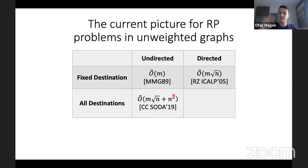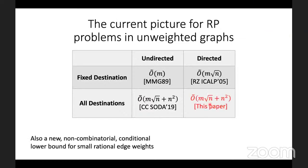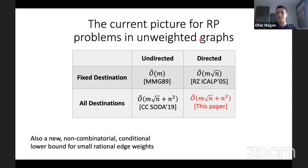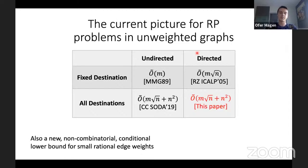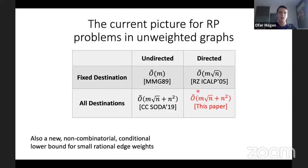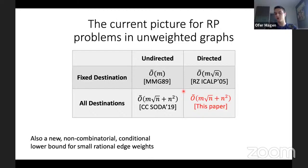There is an interesting gap between undirected and directed graphs, and between the fixed-destination and arbitrary-destination cases. This paper completes the picture of replacement paths in unweighted graphs by providing an O(M√N + N²) algorithm for the directed all-destination case. All algorithms in the table are essentially optimal among combinatorial algorithms, as shown by conditional combinatorial lower bounds from Vassilevska-Williams and Williams.